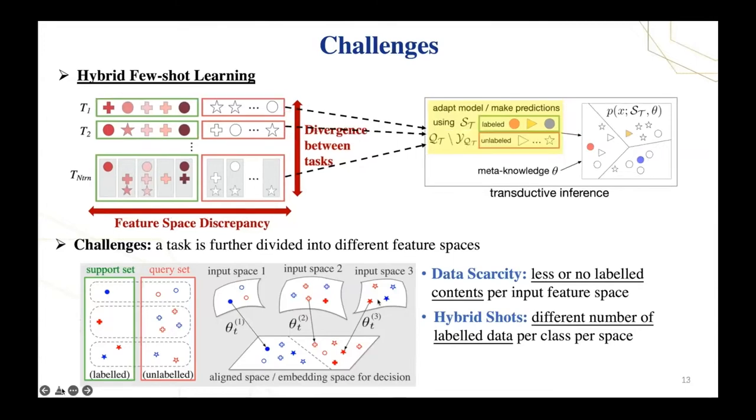Alternatively, if we train a transductive meta-learner which can incorporate unlabeled samples during task adaptation, we are able to jointly learn from heterogeneous content in both support and query sets. The model can capture extra information about the relationship between heterogeneous spaces. So in this work, we use transductive inference-based meta-learning.